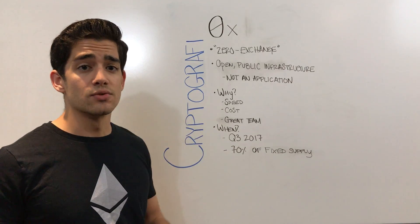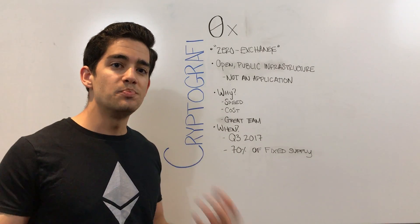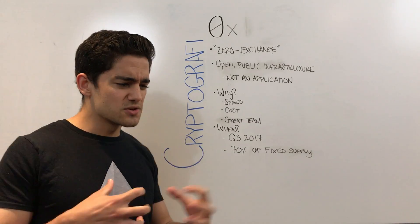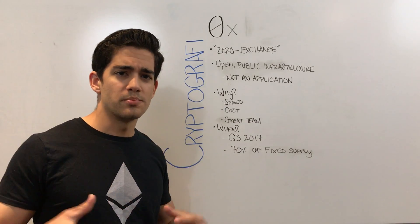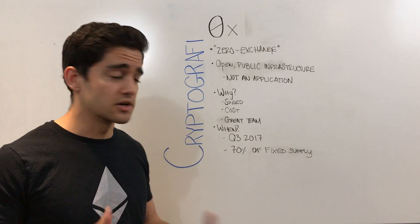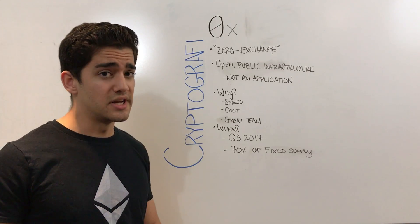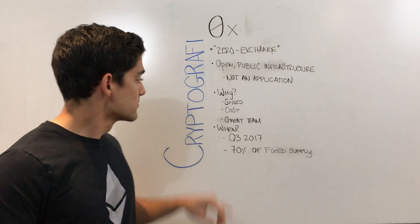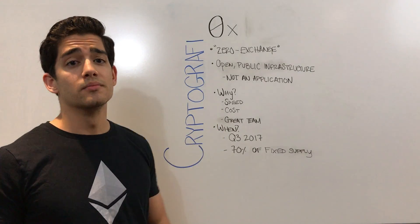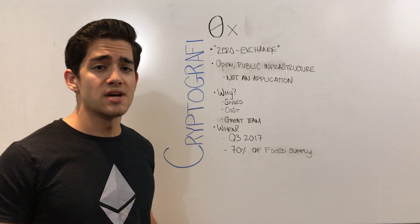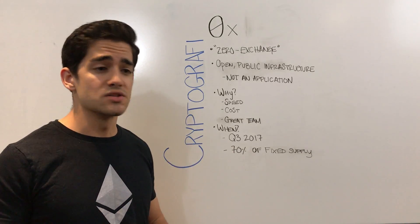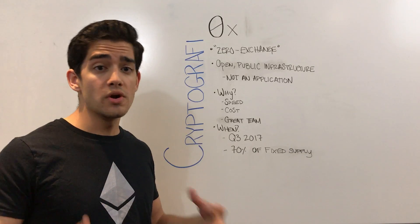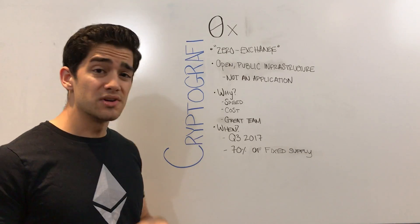So between those two things, they're really trying to foster the speed of the Ethereum network and foster partnership and camaraderie across different companies. And most importantly, something you should always look at when looking at these tokens — they have a great team. They've got engineers, computer scientists, and physicists working on developing the project, with a really strong team of advisors from Coinbase as well as Augur.